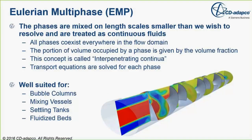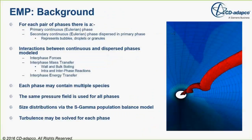In an Eulerian Multiphase model, the phases are supposed to coexist everywhere in the domain. They are treated as continua and transport equations are solved for each phase independently. This modeling approach is well-suited for problems involving bubble columns, mixing vessels, and settling tanks. There is a primary continuous phase and a secondary continuous phase dispersed through it. Mass, momentum, and energy exchange between phases can be modeled by inter-phase interactions. The pressure field is the same for all phases, and each phase may have multiple species or components. Size distributions of dispersed phases can be accounted for using S-gamma population balance methods, and turbulence may be independently resolved for each phase.